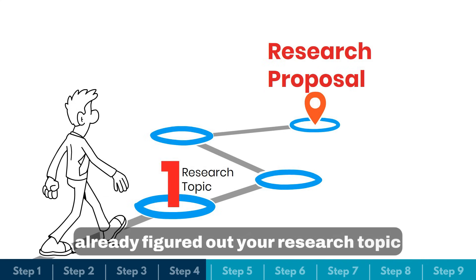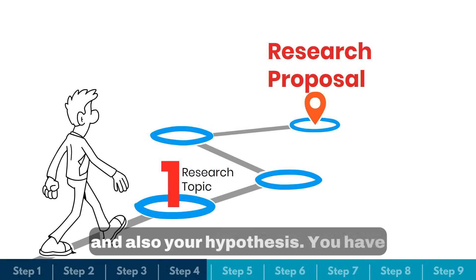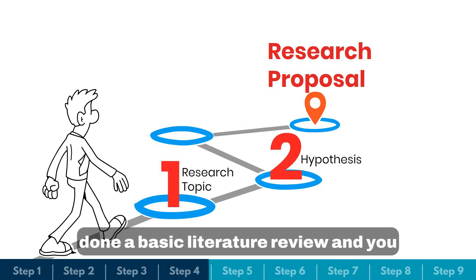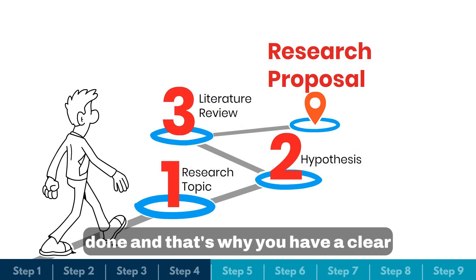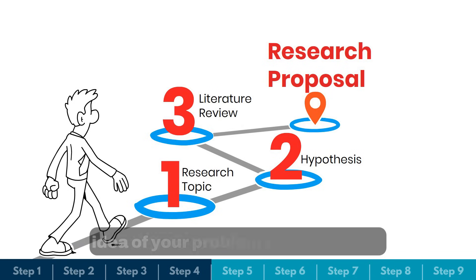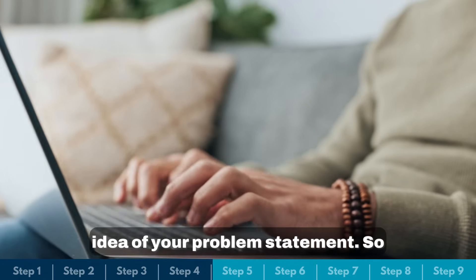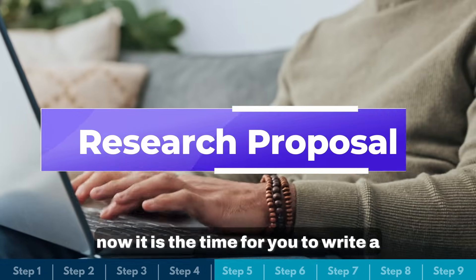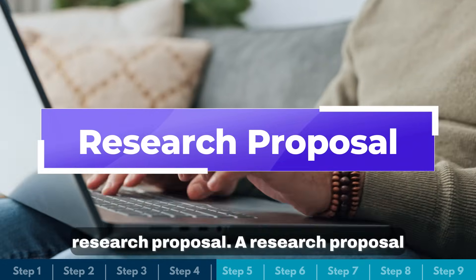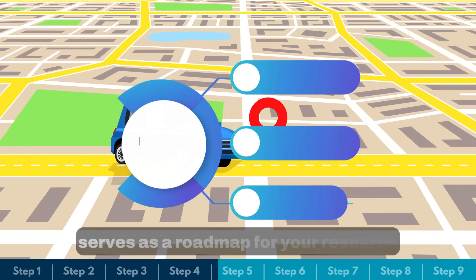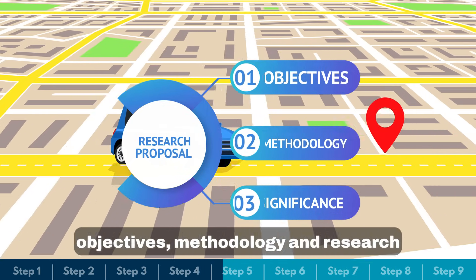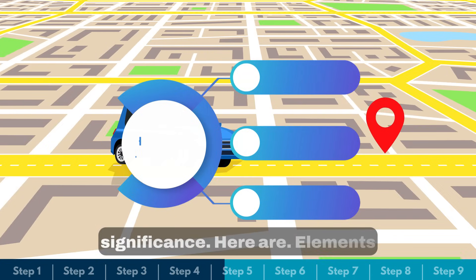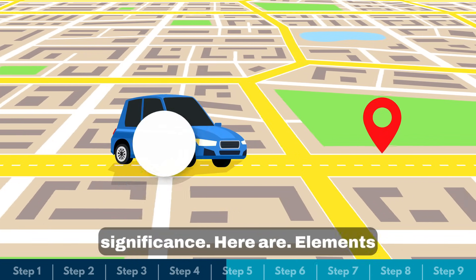If you have reached this far, you have already figured out your research topic and hypothesis, done a basic literature review, and have a clear idea of your problem statement. So now it is time to write a research proposal. A research proposal serves as a roadmap for your research journey — it should outline your objectives, methodology, and research significance.